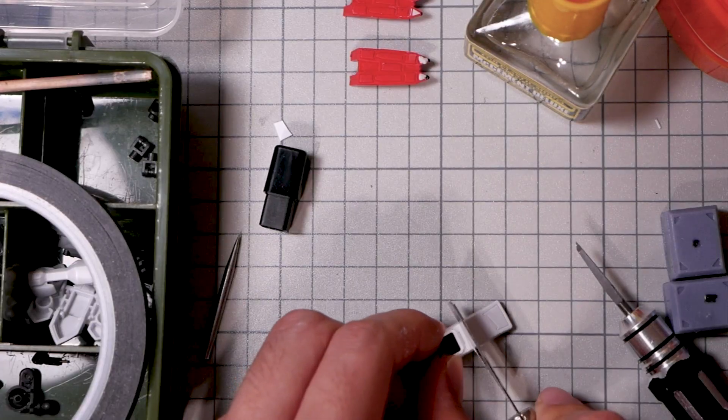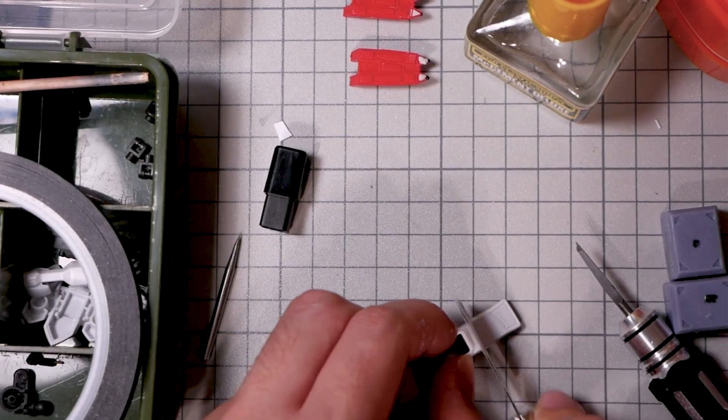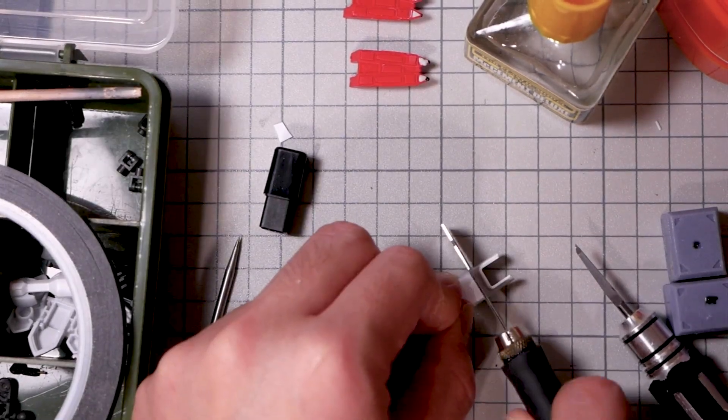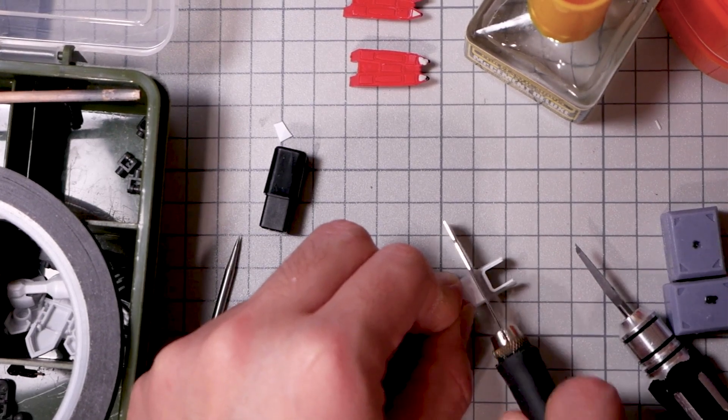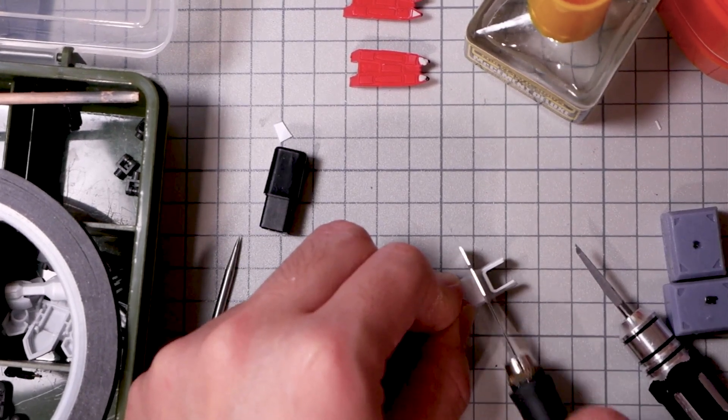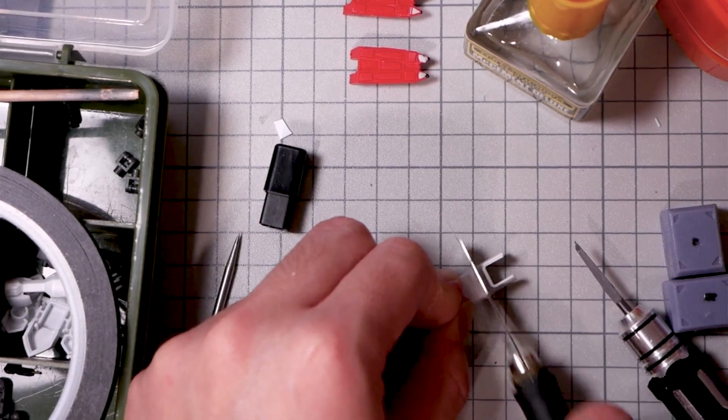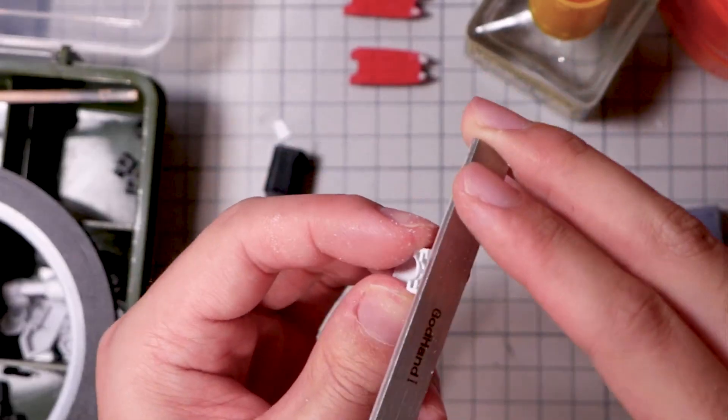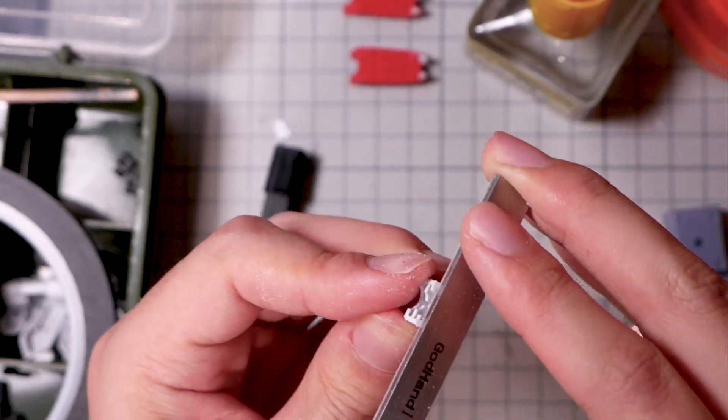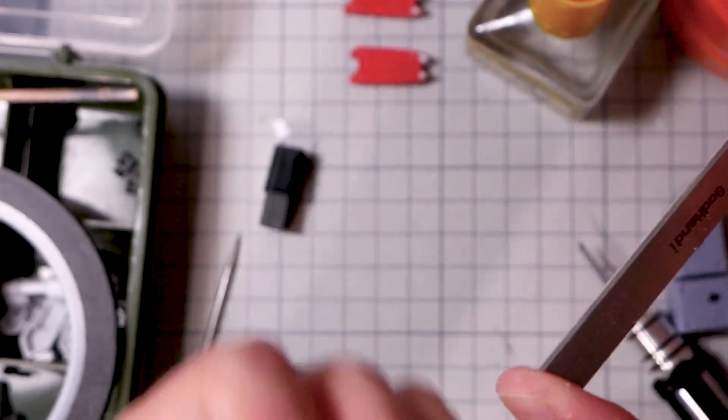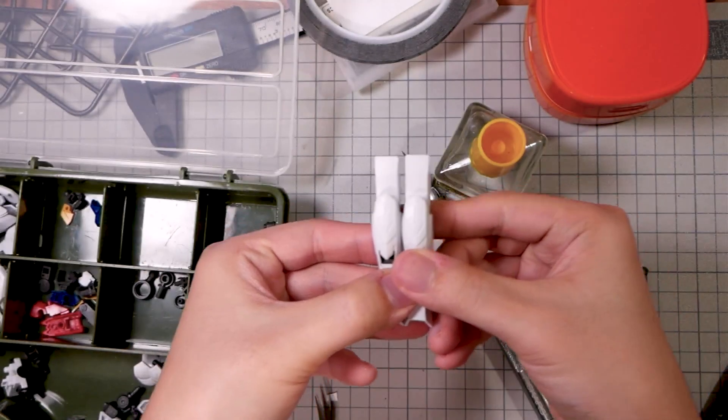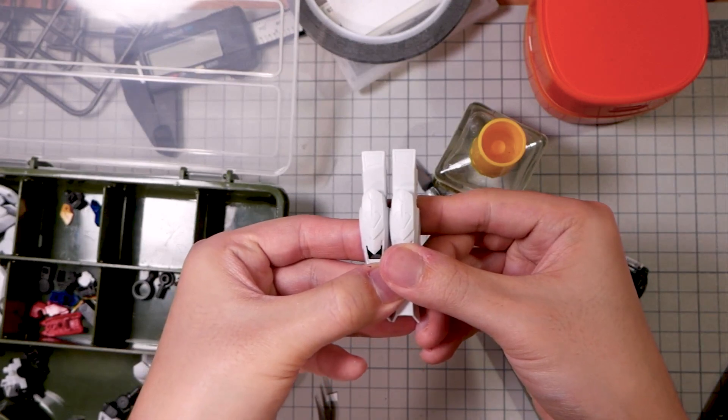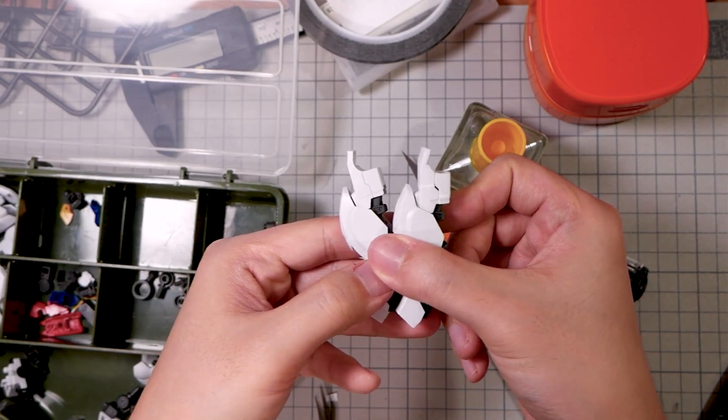I also extended the thighs by one millimeter. The entire process was outside of my camera frame, except this beginning part when I split the part, so that's an L on my part. But generally, I'm splitting both the outer armors and the inner frame of the thighs, and extending all of them by one millimeter. And I also got this surprising result of a little armor gap detail on the side. Looks very nice in my opinion.